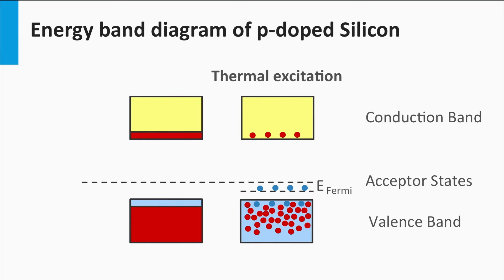P-doping of silicon can be illustrated by an electronic band diagram as well. The boron atoms result in acceptor states. These acceptor states have an energy level within the forbidden band gap of the silicon matrix, and the acceptor states can be occupied by electrons. The energy level of the acceptor states is closer to the valence band than to the conduction band. This means that it requires much less energy for an electron to jump from the valence band to the acceptor state than to the conduction band.